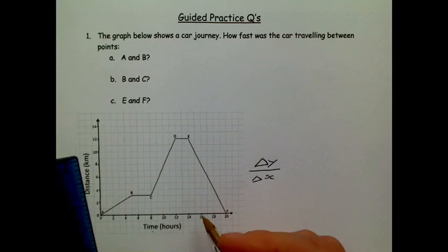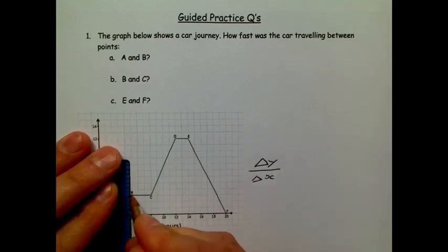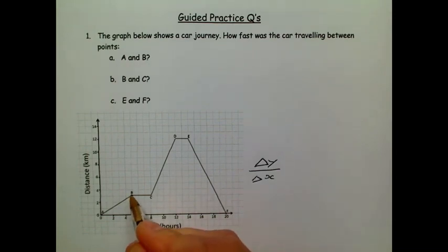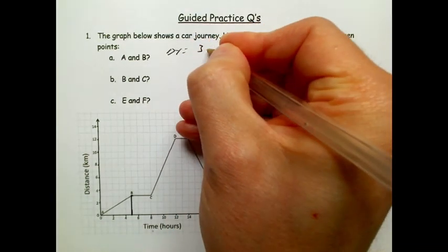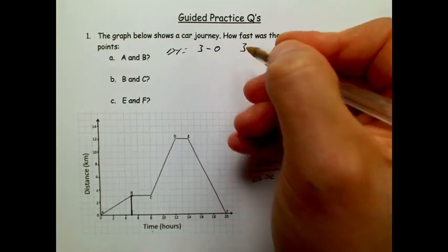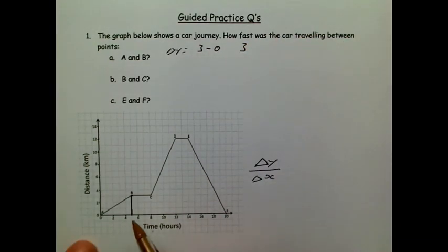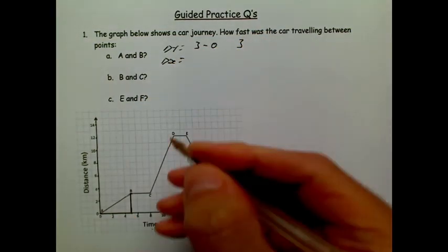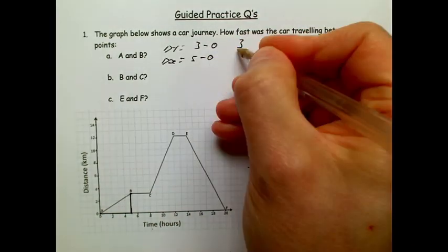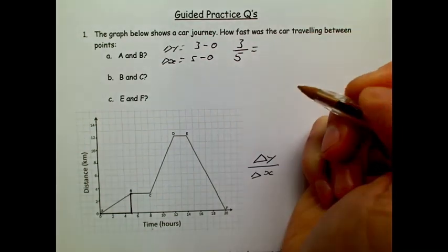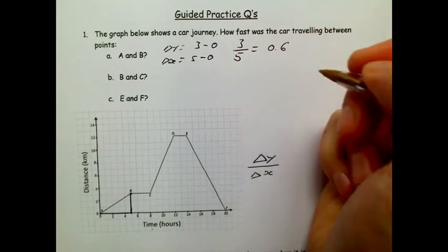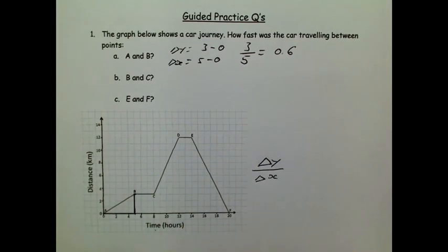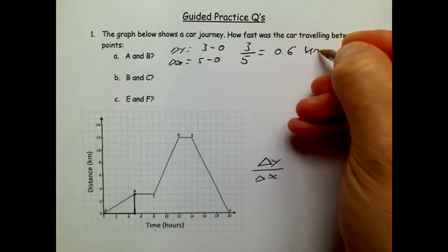So for A and B, our rise is the change in y, which is the difference between here and here. So I need to work out the difference between that point and that point. So the largest point is 3, so my change in y is going to be 3 take away my lowest point, which is nice and simple at 0, so that gives me 3. My run, my change in x, is how far along I go, which is that distance there, so that's going to be 5 take away 0, because it starts again at 0, which is nice and simple, that's 5. So my gradient is 3 divided by 5, and if I type that into a calculator I get 0.6. So I need my units, and the unit this time—the distance is measured in kilometers and the time is measured in hours—so my speed is going to be 0.6 kilometers per hour.